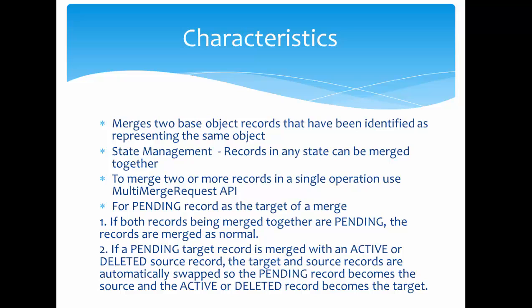Let's consider a state management scenario where you're trying to merge a pending record as the target. If the source record is active and the target is pending, or if both records being merged are pending — that is, source is pending and target is pending — then the records are merged normally. However, if the pending target record is merged with an active or deleted source record, the target and source records are automatically swapped: the pending record becomes the source, and the active or deleted record becomes the target.